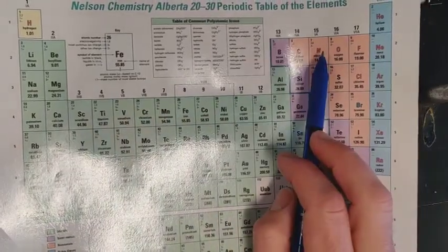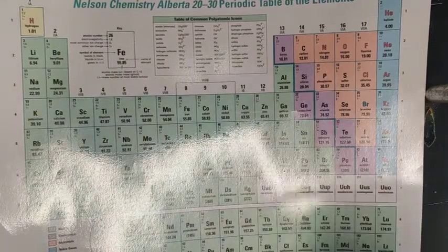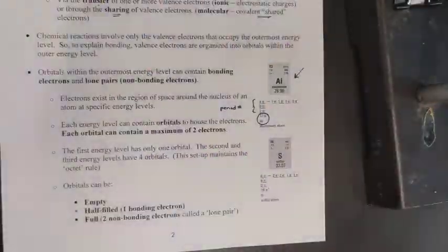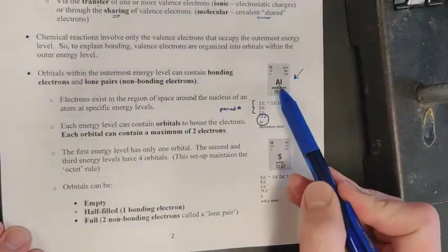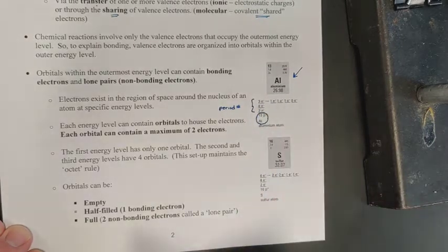All right, so something like nitrogen, for example, being in period two, would have two energy levels to hold all of its electrons. Okay, aluminum here is obviously in period three, so it's going to take three energy levels to hold all of its electrons.